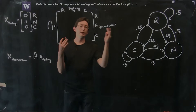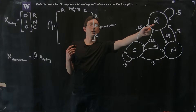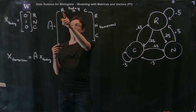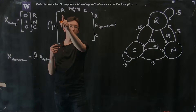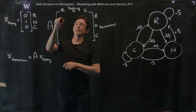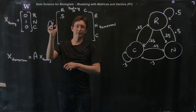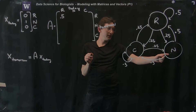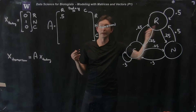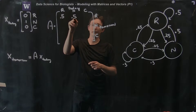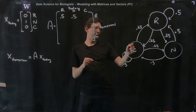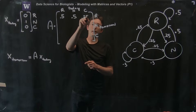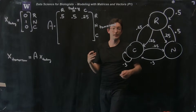We fill this data in according to the diagram. If it was rainy today, there's a 50% chance of being rainy tomorrow, so the rainy-today, rainy-tomorrow entry is 0.5. If it was nice today, there's a 50% chance of being rainy tomorrow, so that entry is 0.5. If it was cloudy today, there's a 25% chance of being rainy tomorrow, so that entry is 0.25.